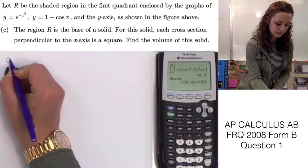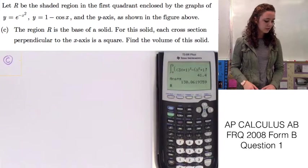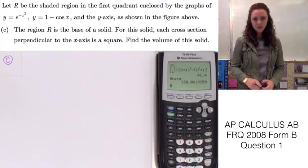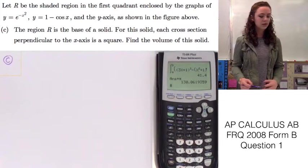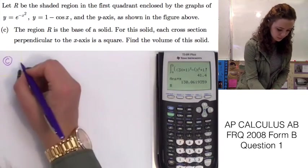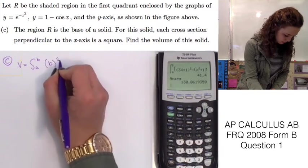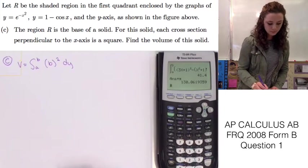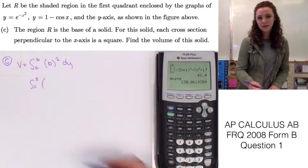On to part C. Part C says the region R is the base of a solid. For this solid, the cross sections perpendicular to the y-axis are squares. Find the volume of this solid. We know that if we're using a cross section and the solid is going to be a square, that it's going to be the base squared. So our function for this is V equals the integral of base squared DY because it's going on the y-axis. Again, we know that the upper and lower limits are going to be from 0 to 3 because we found that in the previous problem.